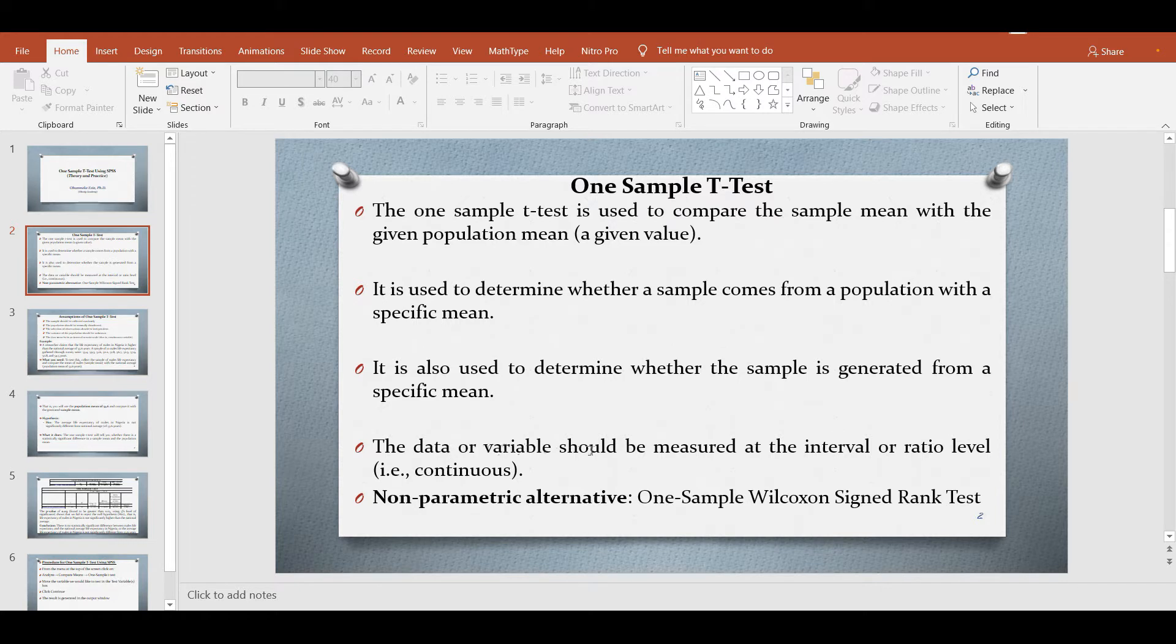The data or variable should be measured at interval or ratio level, that is it has to be continuous. The non-parametric alternative of one sample t-test is one sample Wilcoxon signed rank test.